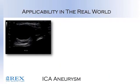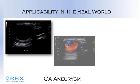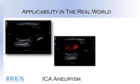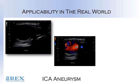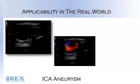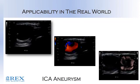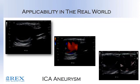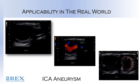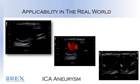With applicability in the real world with ultrasound, we need precision B-mode imaging, we need color Doppler, and I really have a big emphasis on secondary imaging parameters. This is an internal carotid artery aneurysm — pretty rare. I've seen about three in my life.